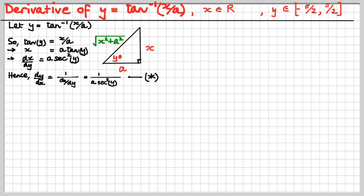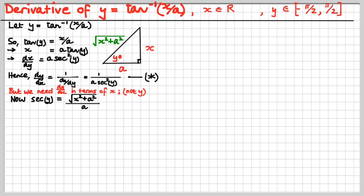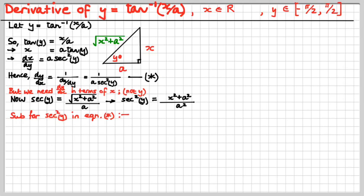We have to get rid of this y and get the thing in terms of x. What is sec y? Well, let's do cos first — cos y is a over the hypotenuse. Therefore sec y is the hypotenuse over a. And sec squared y is that thing. Now we'll substitute for sec squared y into equation star and see what we get. Some cancel-a-rooney happening — and we get that result.